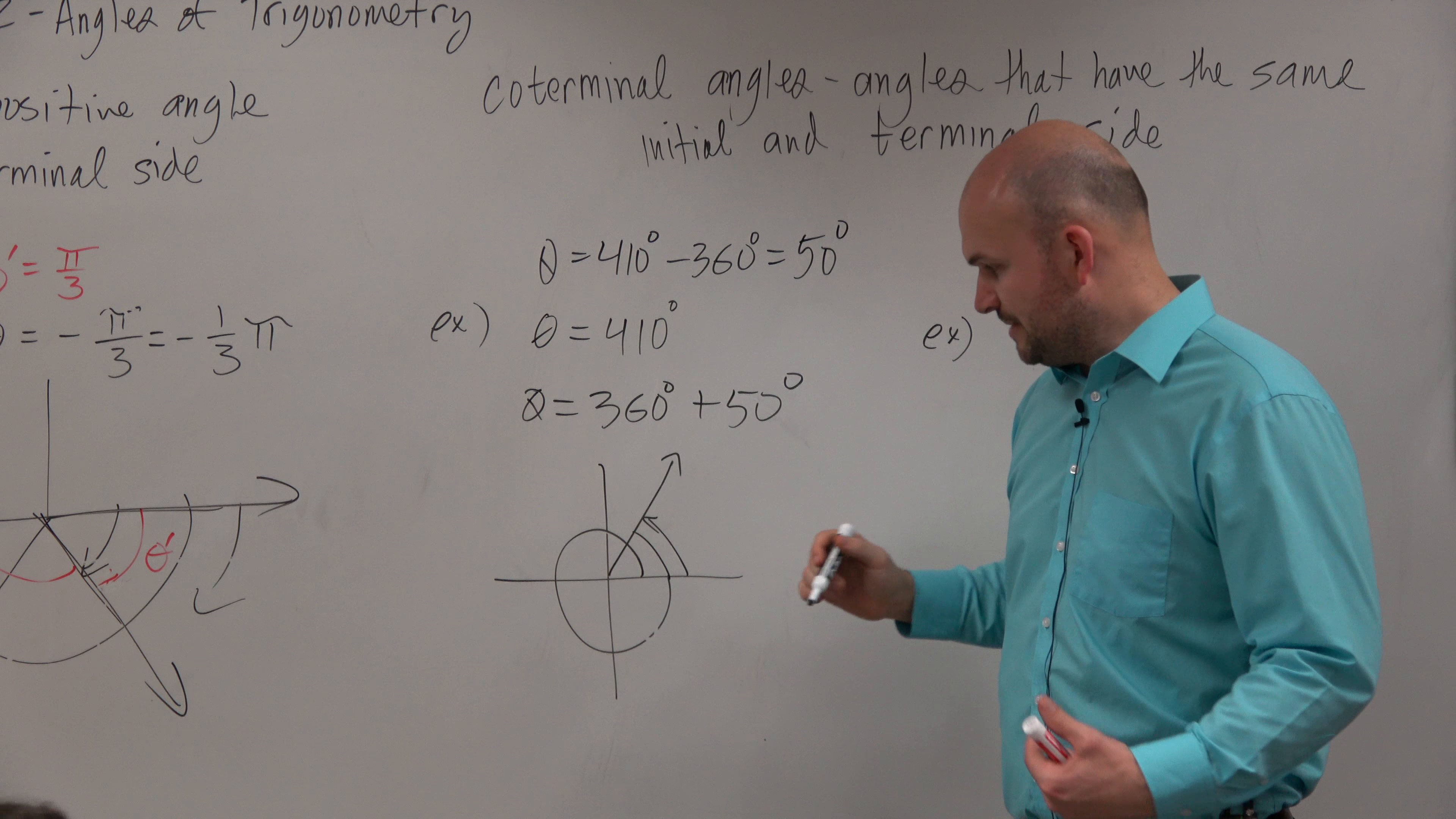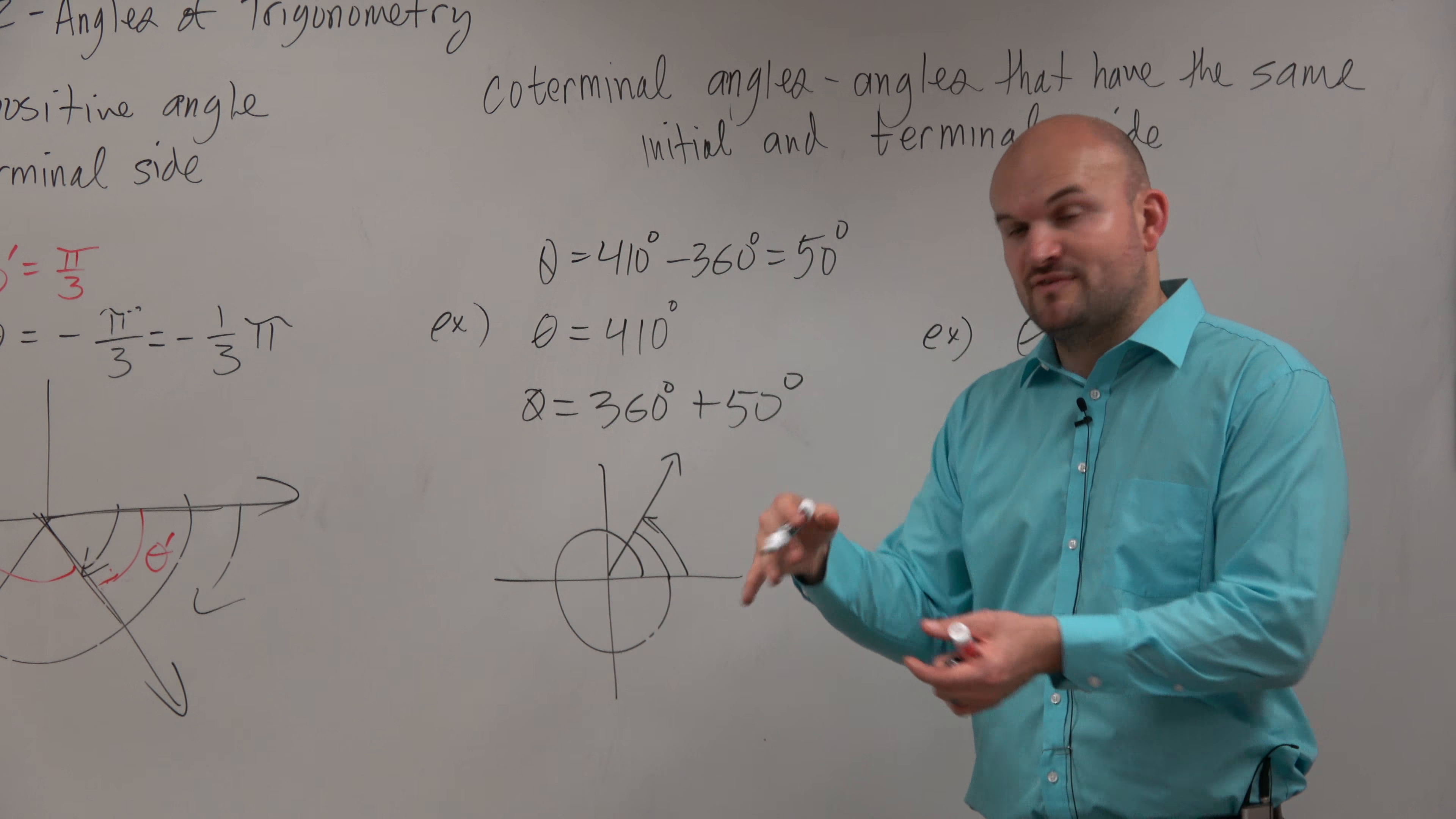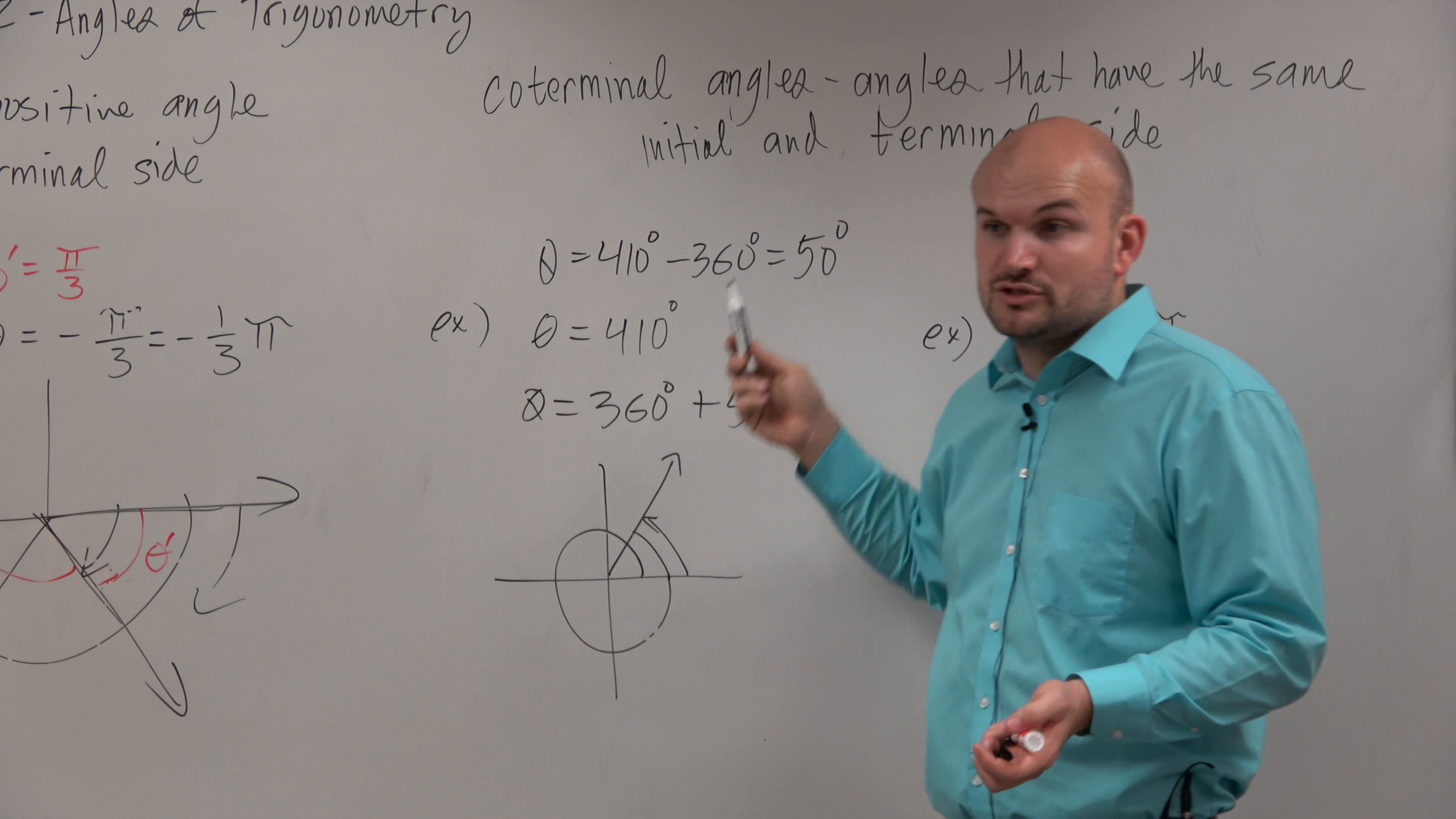And I hope you guys would agree with me that 410 degrees is equivalent to 50 degrees. They're the same. I mean, they're not the same measure of angle, but they take you to the same terminal side. And that's the definition of coterminal angles. Angles that have the same initial and terminal side.